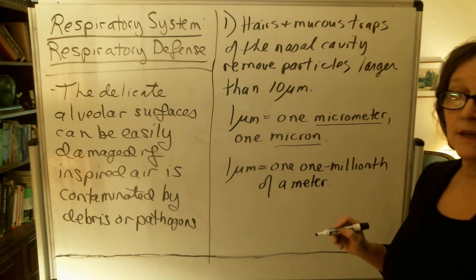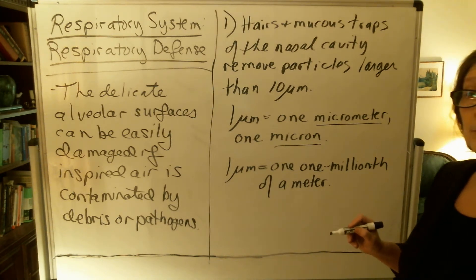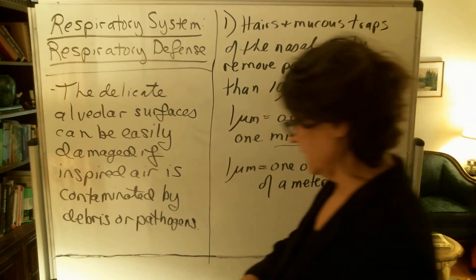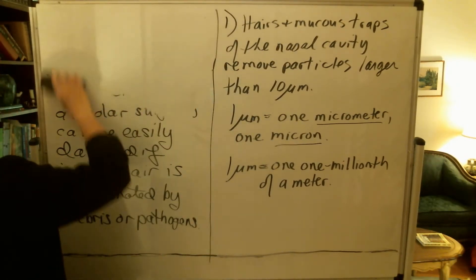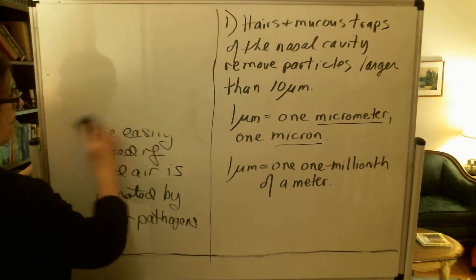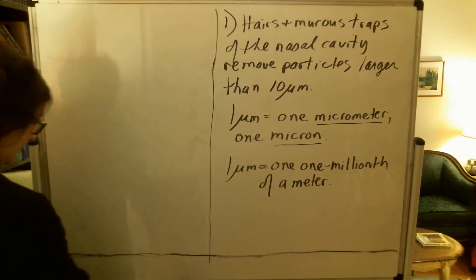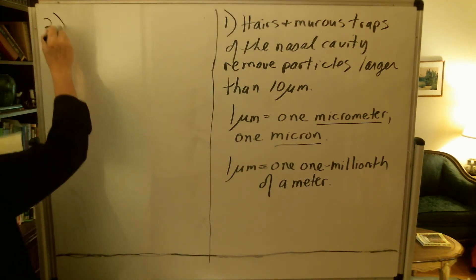So what I just told you here is that the hairs and mucus traps of the nasal cavity remove things down to 10 microns in size. That's the first level of the respiratory defense.